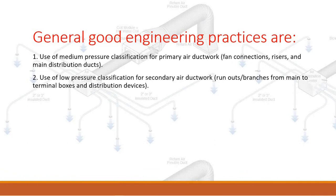General good engineering practices are: one, use of medium pressure classification for primary air ductwork, fan connections, risers, and main distribution ducts; two, use of low pressure classification for secondary air ductwork, run-outs and branches from main to terminal boxes and distribution devices.